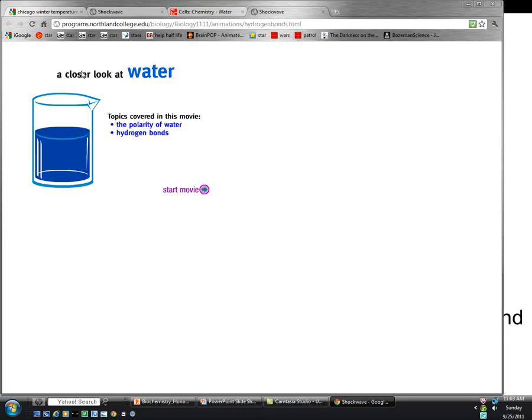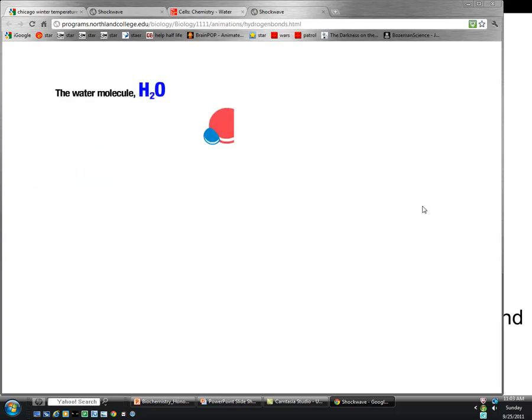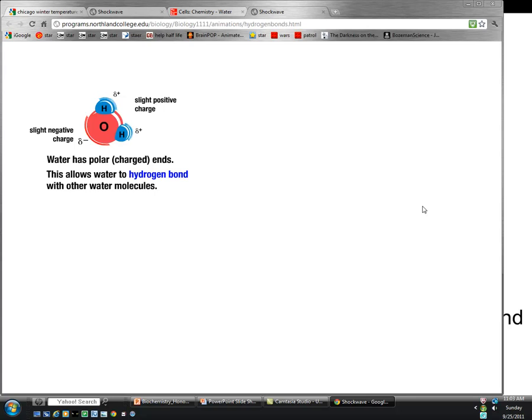This short animation takes a look at the polarity of water and hydrogen bonding that forms. Because of the polar covalent bonds that exist between the hydrogen and the oxygen, water has polar or charged ends. The electrons spend more time around the oxygen giving a partially negative charge. They spend less time around the hydrogens giving that end a slightly positive charge. This charge allows them to interact with other molecules that are charged like this.